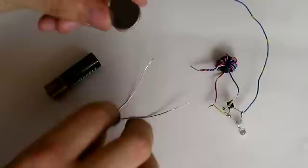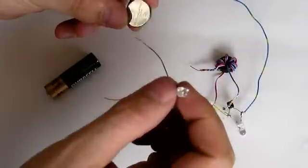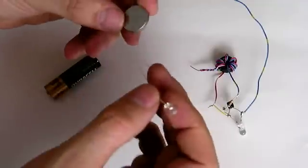A joule thief is a very simple circuit you can build that can drive a white or a blue LED from a single battery cell, even when the battery is almost dead. I've got a coin cell here that's 3 volts and I've got a blue LED that requires 3 volts to light up.